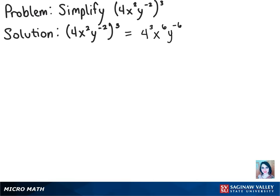And we know that 4 cubed is 64. So then we have 64 times x to the 6th power times y to the negative 6th power.